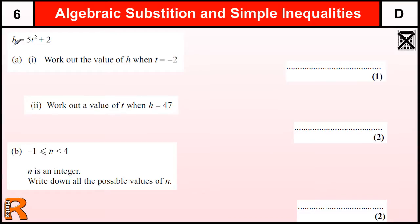Here we have a formula: H equals 5T squared plus 2. Work out the value of H when T is minus 2. It's only worth one mark, so we only get a mark for the answer, but it's worth writing it down properly. So we've got 5 times T squared, where T is minus 2.